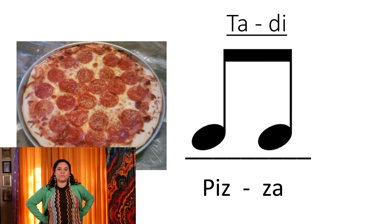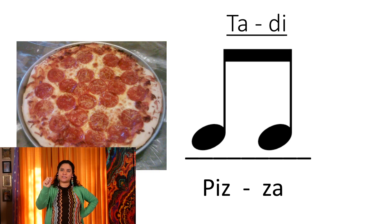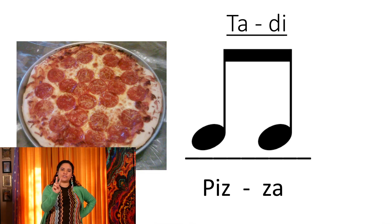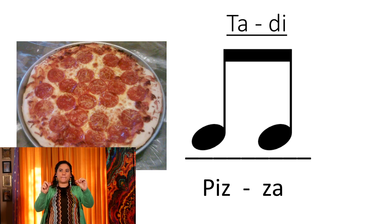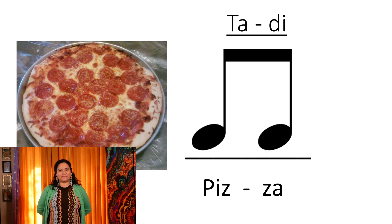The next music symbol we have is TA-DI. Look closely at the beat line — that's the black line under the notes. Even though TA-DI is two sounds, it lays on one beat line. That's very important to remember. Today we're gonna call that note pizza.